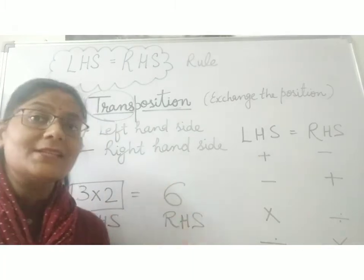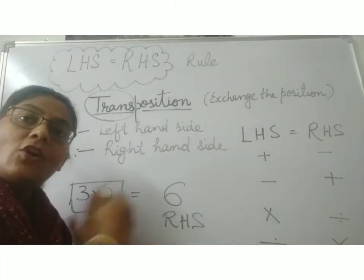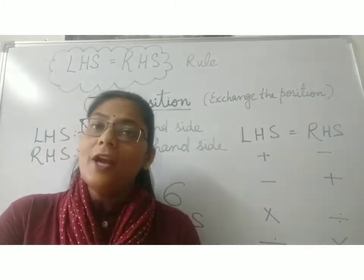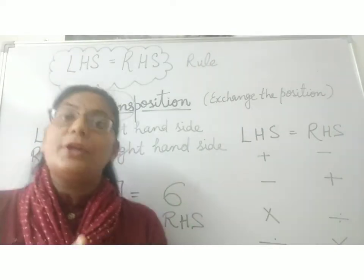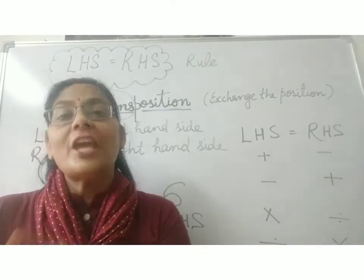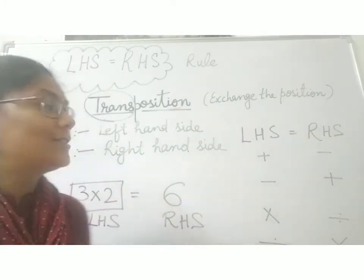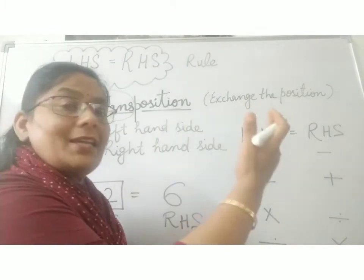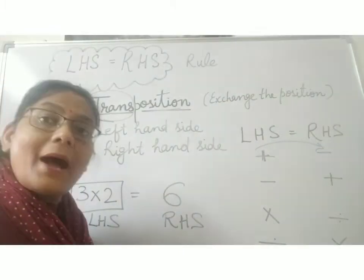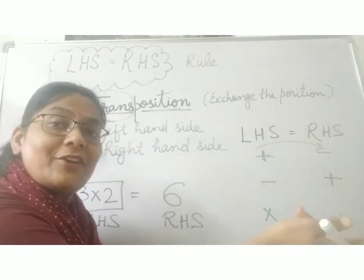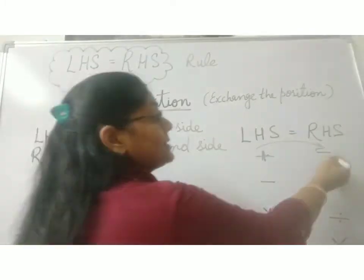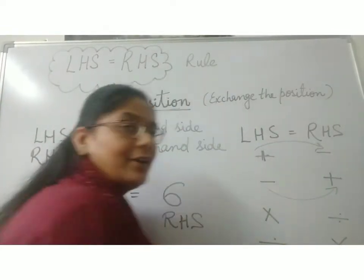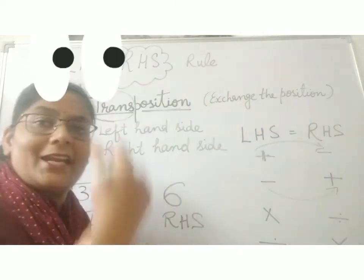How do you use this rule? If the number in any of the sides is adding, subtracting, multiplying, or dividing, when we take that number to another side, its sign changes. If the number is adding in the left hand side, when we take that number to the right hand side, it will become minus — it will convert into minus. If that number is subtracting in the left hand side, when we take that number to the right hand side, it will become positive.